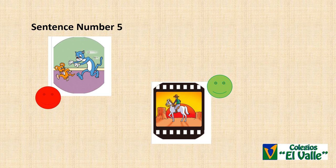Sentence number five. She didn't like watching cartoons. She liked watching films. She didn't like watching cartoons. She liked watching films.